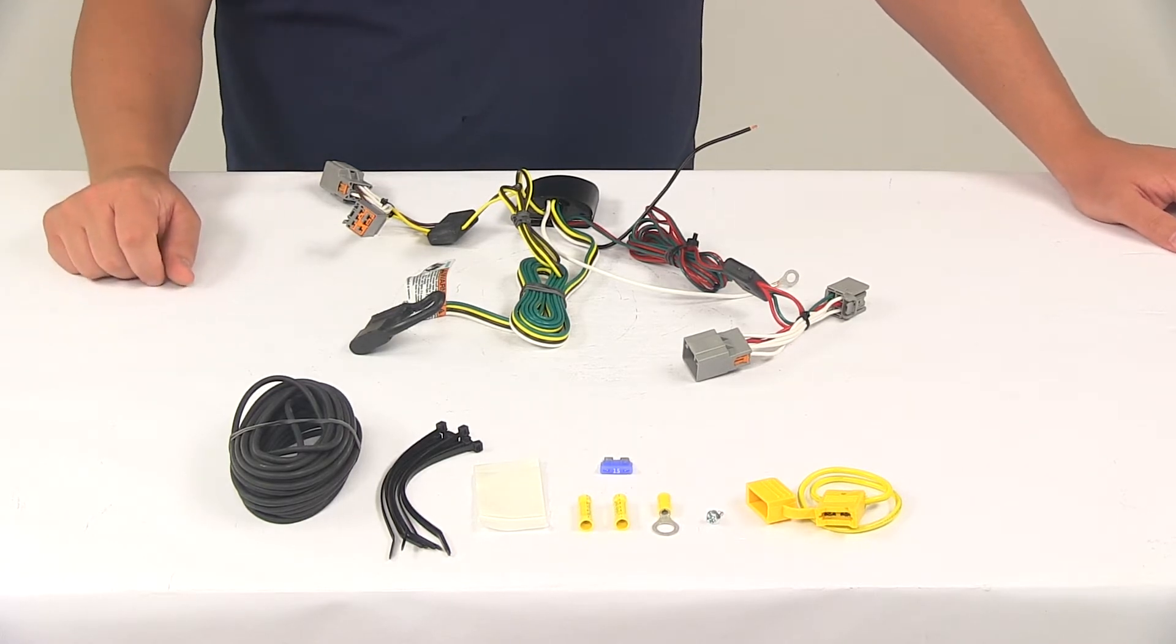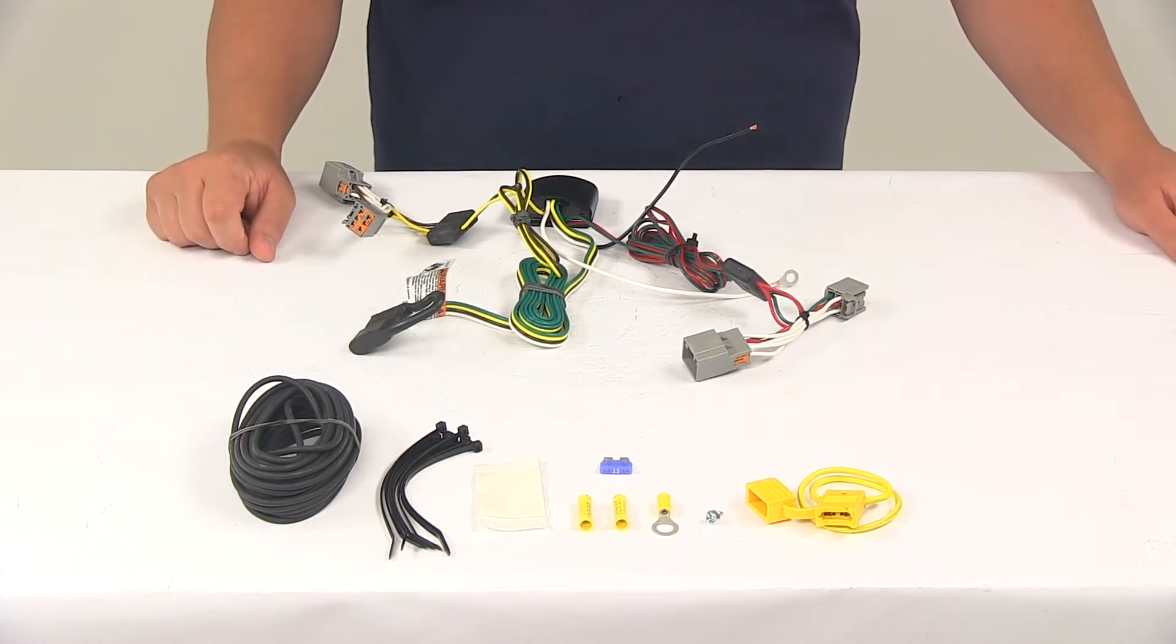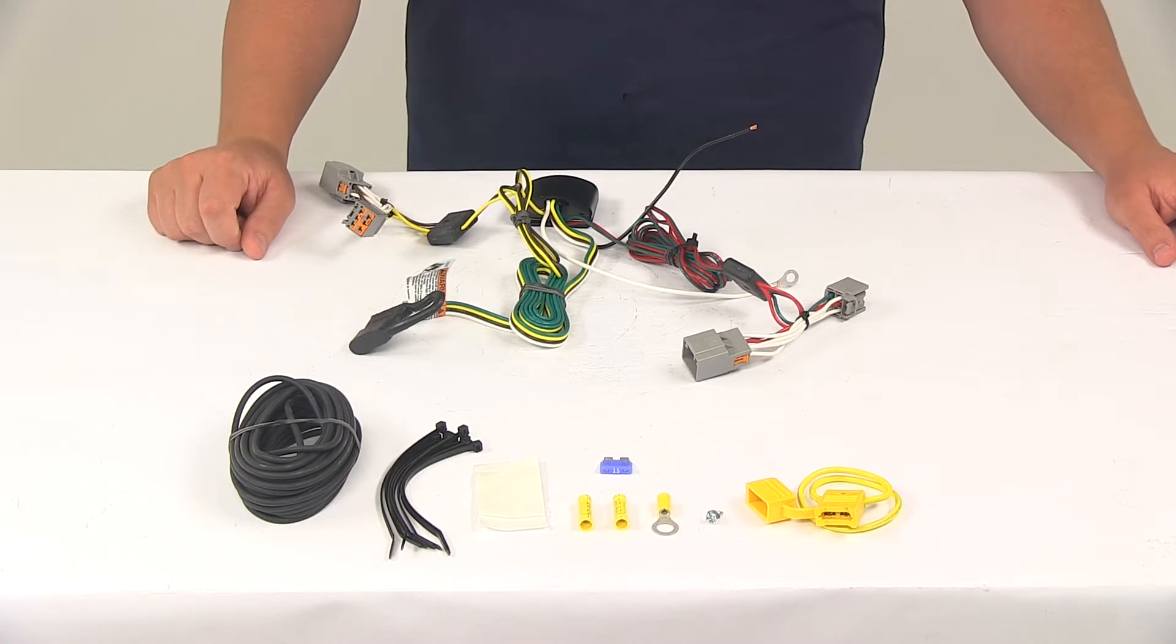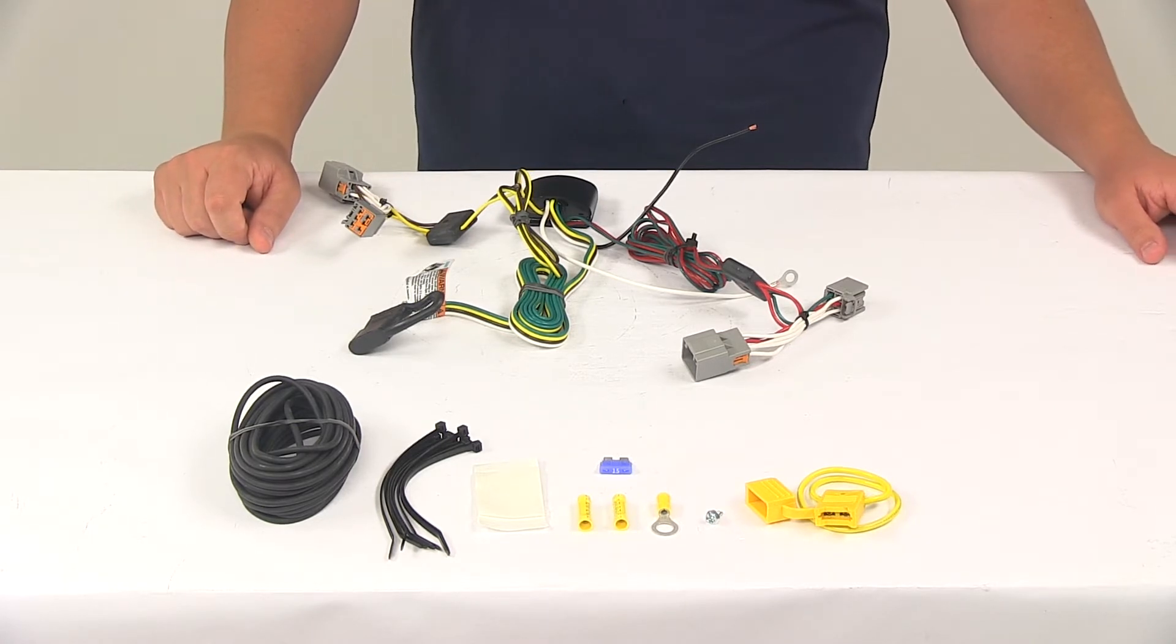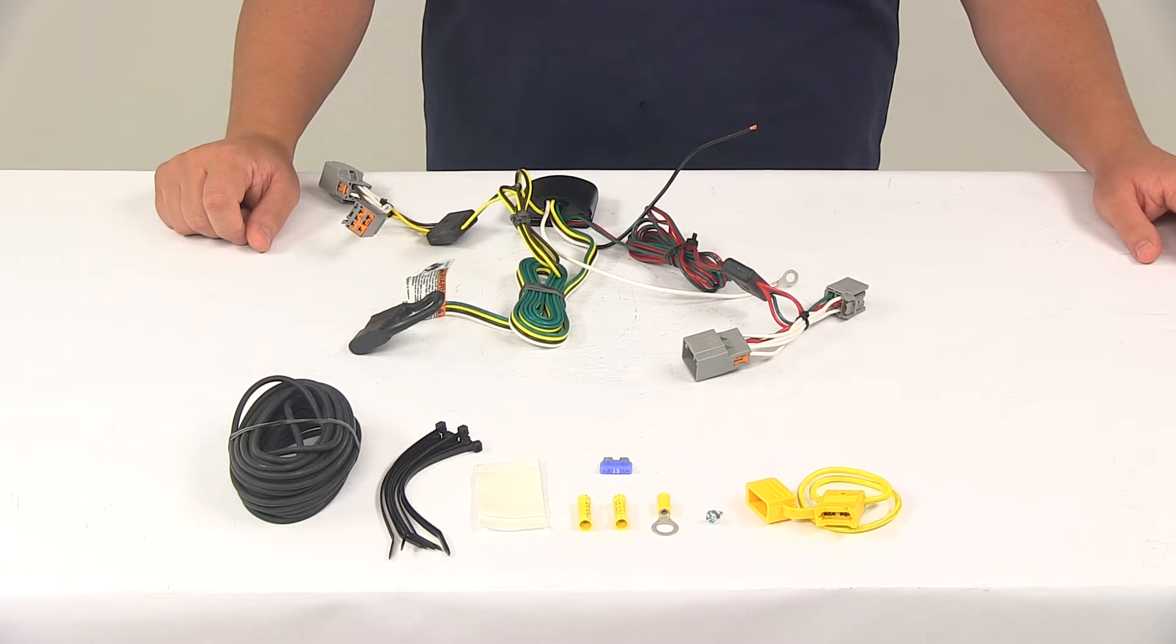It's also recommended that you use a small amount of dielectric grease in all your electrical connections, like the plugs on the vehicle and the four-pole connector itself. The grease is designed to help prevent corrosion to the connection points. It is sold separately and available at eTrailer.com if you're in need.